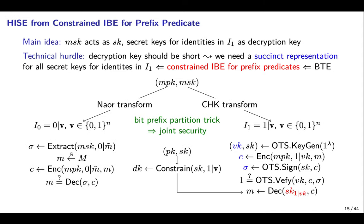Our first HISE construction is largely inspired by the aforementioned ISE construction from IBE. The main idea is still to apply the Naor and CHK transforms to IBE. The difference is that we set the master secret key as the signing key, while using secret keys for identities in space I1 as the decryption key. A technical hurdle is that the decryption key should be short; thus all secret keys for identities in space I1 must have a succinct representation. To guarantee this, we propose a new type of IBE called constrained IBE for prefix predicates as the underlying primitive, which in turn can be built from binary tree encryption.